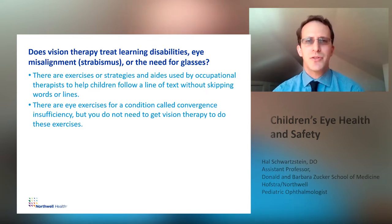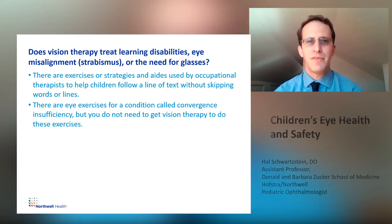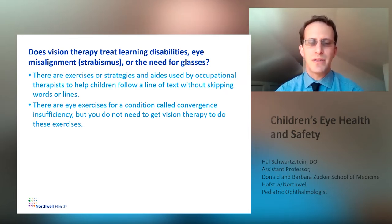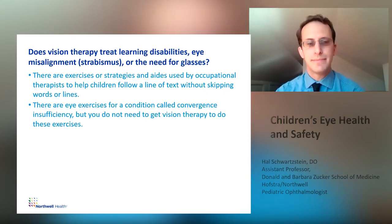There are exercises or strategies and aids used by occupational therapists to help children follow a line of text without skipping words or lines. This is different from vision therapy. There are eye exercises for a condition called convergence insufficiency, but you do not need to get vision therapy to do these exercises — these would be recommended to you by your eye doctor if needed.